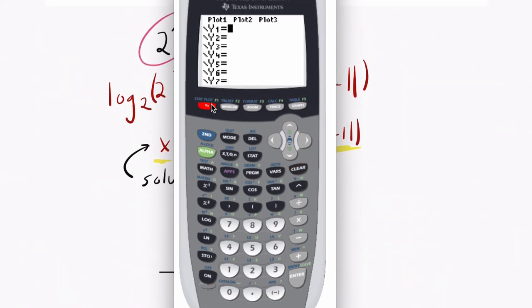So if you press y equals, we can graph these fairly quickly. We have negative 2x plus 11. That's my line. And then 2 to the power of x here. And I go to graph. And I see my line. And there's my exponential function. And they're crossing.